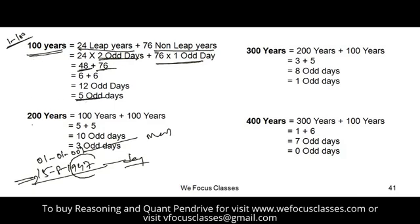In the first 200 years, you add 100 plus 100: 5 plus 5 gives 10 odd days, which reduces to 3 odd days. For 300 years, 200 plus 100 gives 3 plus 5 equals 8 odd days, which reduces to 1 odd day.